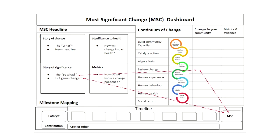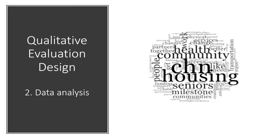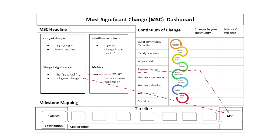Here is an example of our Most Significant Change dashboard that each of the CHNs received after their participation. The dashboard has three components: the MSC headline or outcome, which shows what the story of change was, its significance to the community and health, and how you would measure outcomes; the continuum of change; and the milestone mapping exercise. The two-way red arrows indicate that data from these activities can be triangulated to ensure data elements from the MSC headline, the timeline, and the continuum are all aligned, which helps to validate the data.